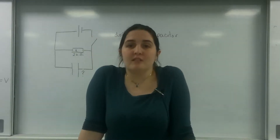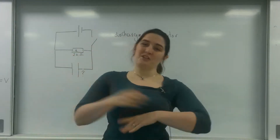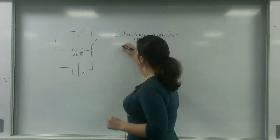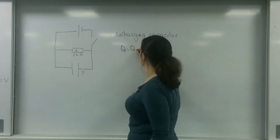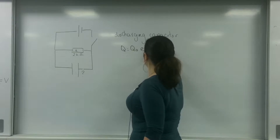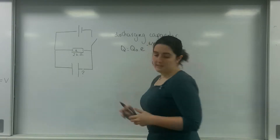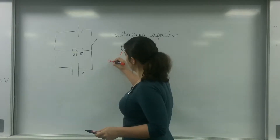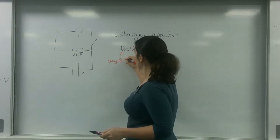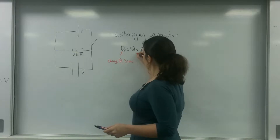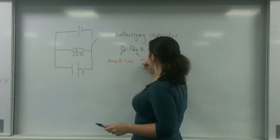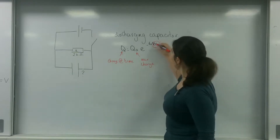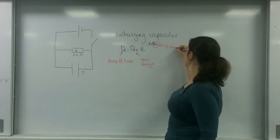Hello and welcome to TL Physics. Today I'm going to talk about a discharging capacitor. The formula in your datasheet for a discharging capacitor is Q equals Q-naught times E to the minus T over RC. Q is the charge at time T, Q-naught is the maximum charge, and RC is the time constant.